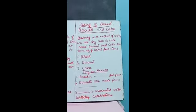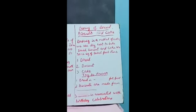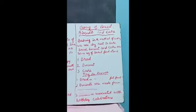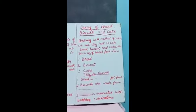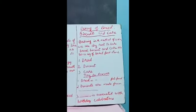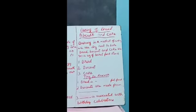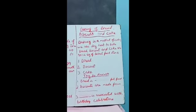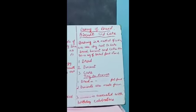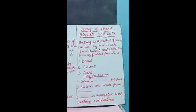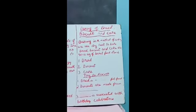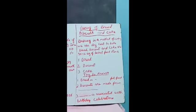Next one is biscuit. All children like biscuits. There are so many flavours in biscuits and so many essences are used. In the bakery, biscuits are made using wheat flour, sugar, salt, chocolate, and vanilla essence. So many essences are used — they give taste to the biscuit. Biscuits are also made only in the bakery.